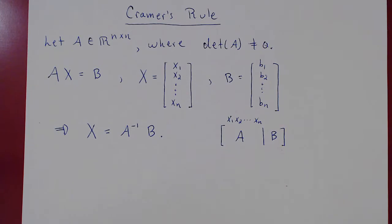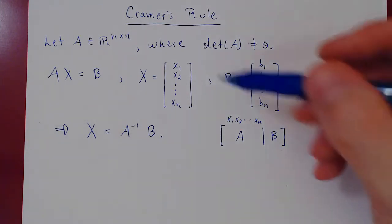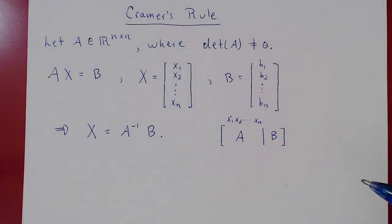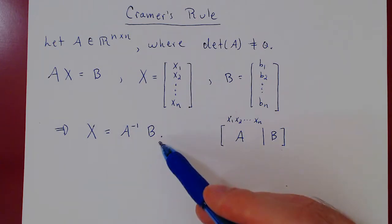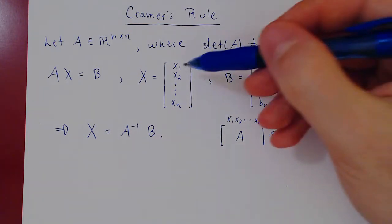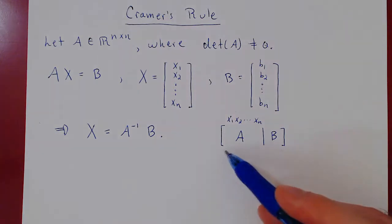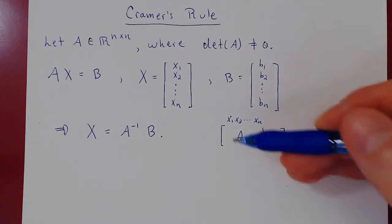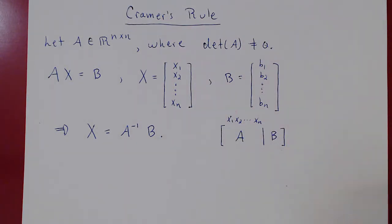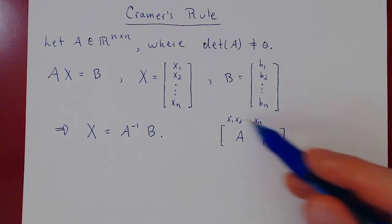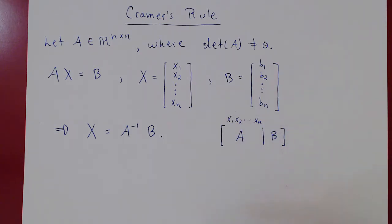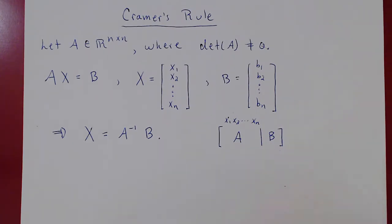What Cramer's Rule gives you is a way to solve for variables independently. With the other methods, you simultaneously find the values of all variables — row reduction gives you all n variables at once. The nice thing about Cramer's Rule is it gives you a way to solve for a single variable without solving for the others.